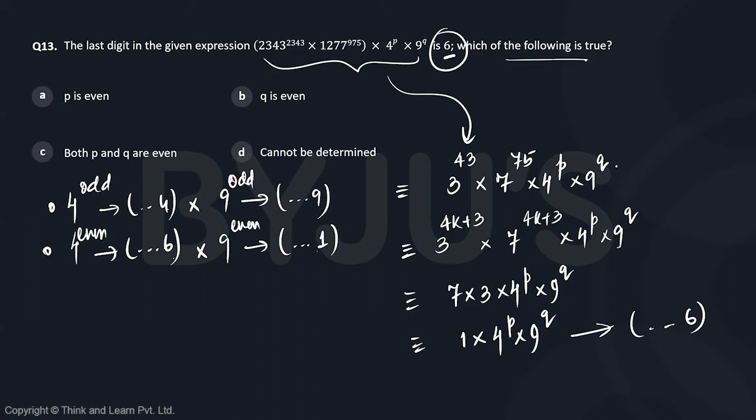The question is, which of the following is true? p is even, q is even, both p and q are even, and cannot be determined.